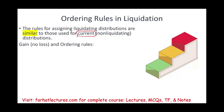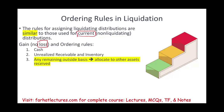Assuming we have a gain scenario — and we will discuss what a gain scenario means in a moment. Gain means no loss, because under a loss we're going to have different scenarios. The ordering rules are the following: first, we distribute the cash; then we distribute the hot assets — unrealized receivables and inventory; then the third step is a little bit different.